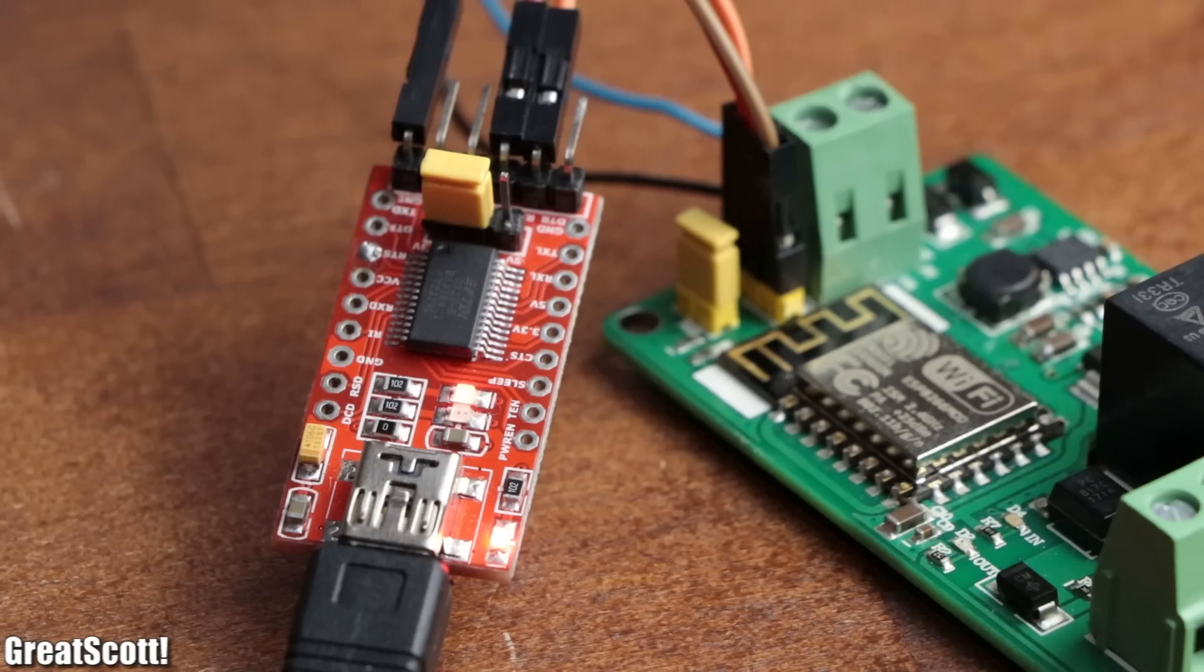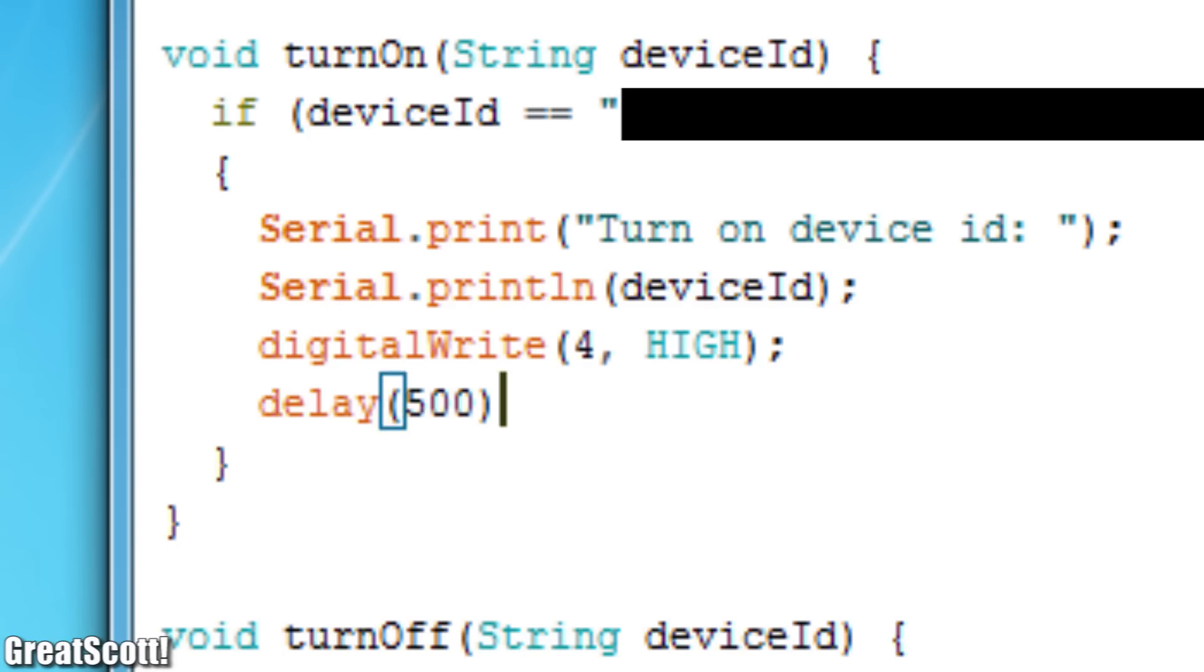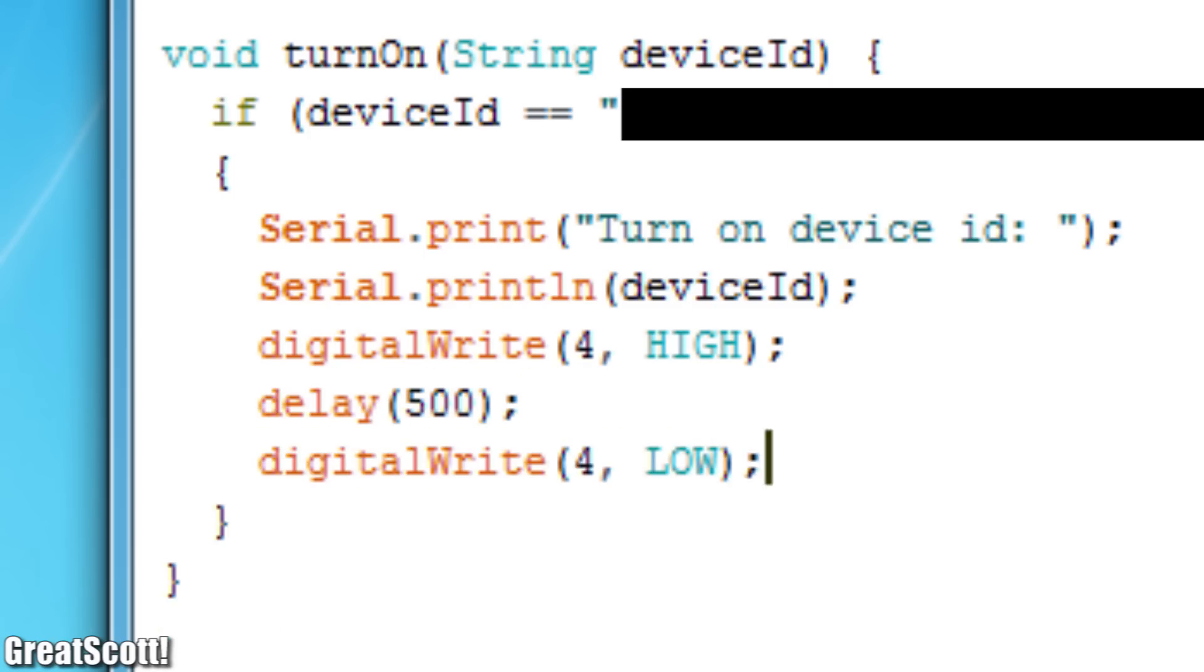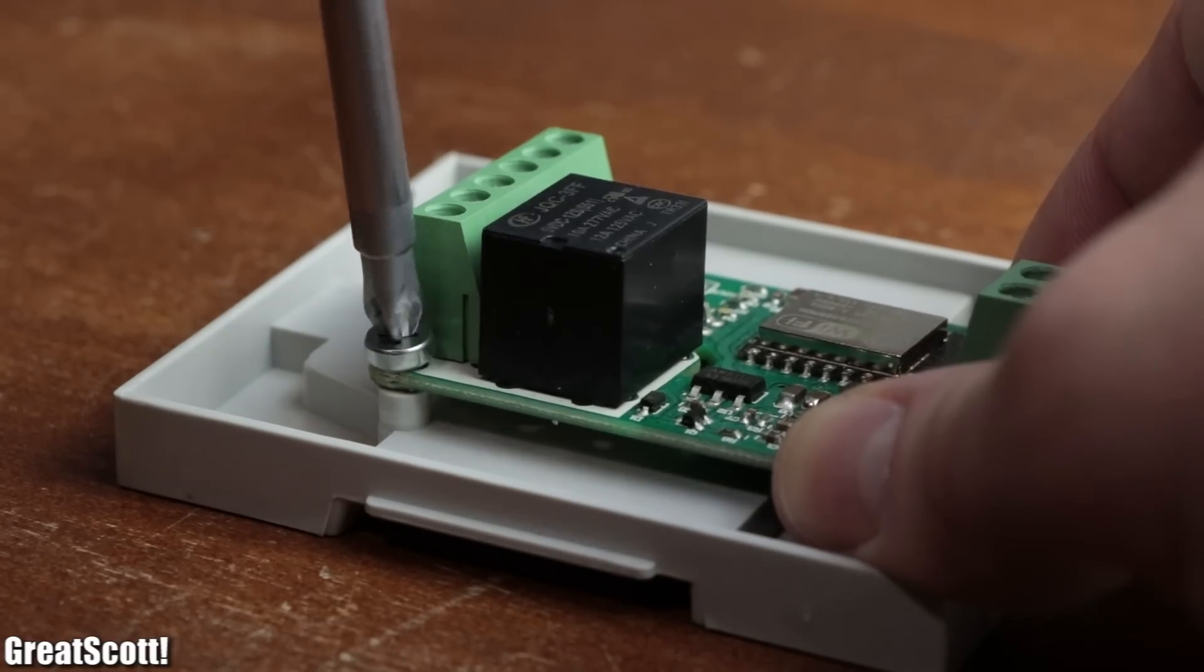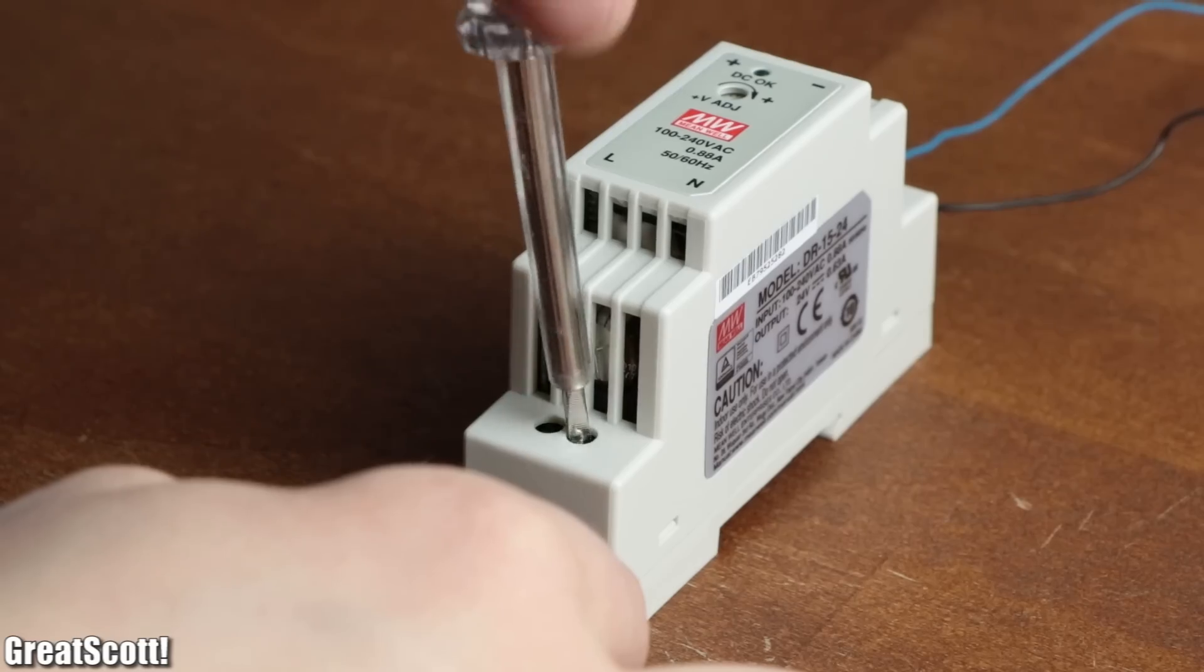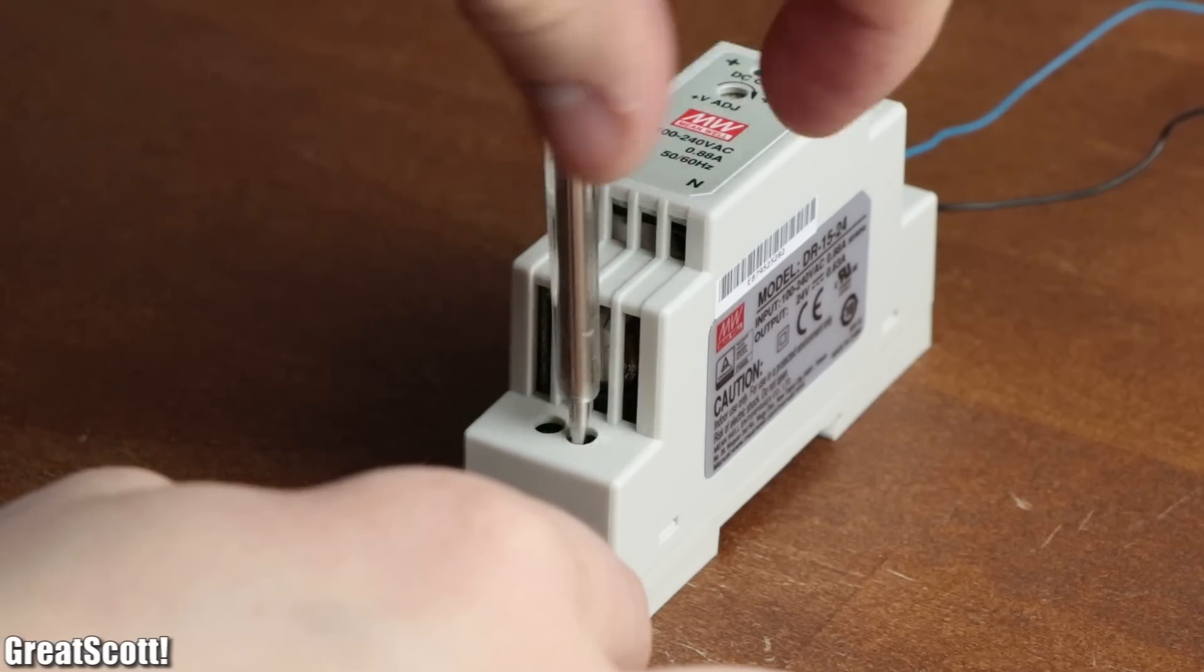So I reprogrammed my microcontroller in a way that it only activates the relay for half a second to simulate the current surge. Mounted the board inside a hatch rail compatible enclosure and added a 24 volt hatch rail power supply to the mix.